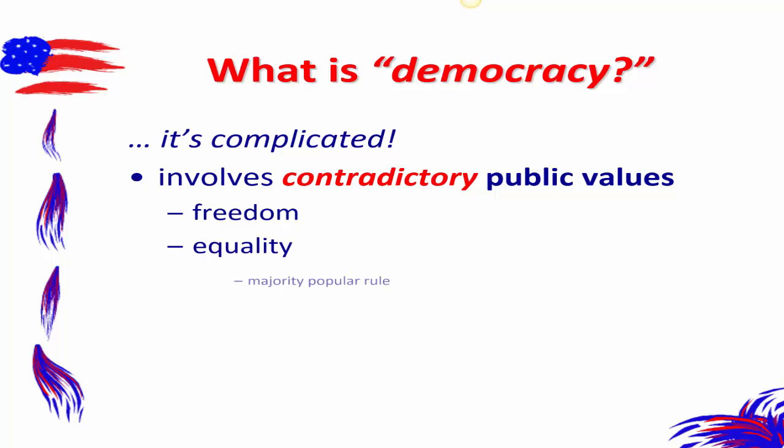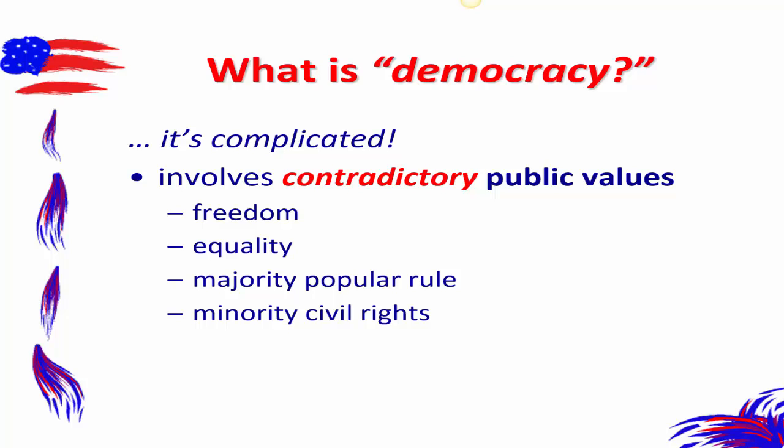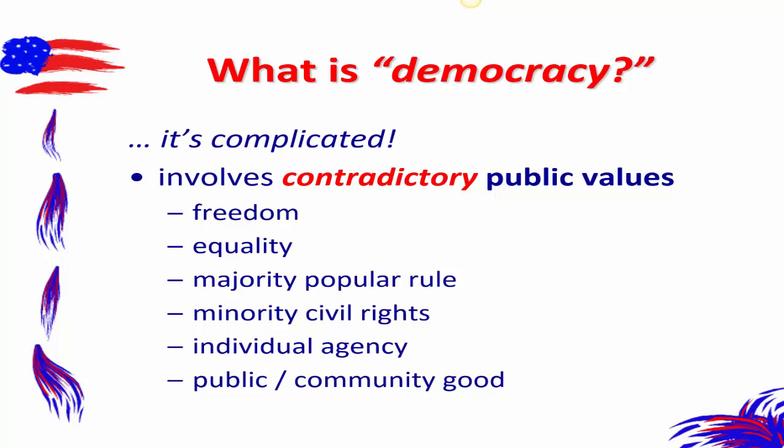Freedom and equality are sometimes at cross purposes. Democracy is generally understood as majority popular rule — we vote, make decisions, and whatever most people agree with becomes public policy. But does majority popular rule always mean it's democratic when it might impinge on the rights or quality of life of minority groups? Majority rule and minority civil rights are sometimes at cross purposes. Democracies often involve individual agency — individuals able to act and make decisions — but individual agency sometimes works at cross purposes with the community or the public good.